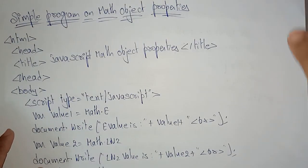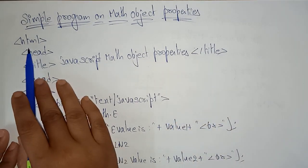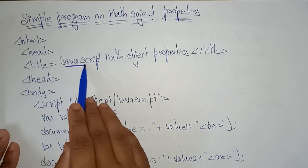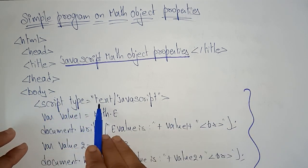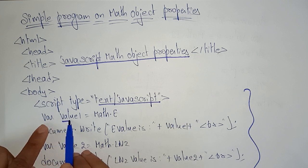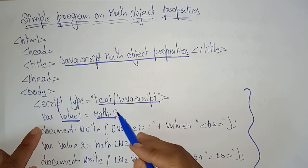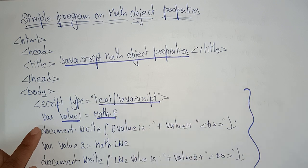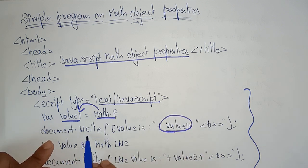Let's see a simple example of how to use the Math object using Math properties and methods. In the HTML, the title is 'JavaScript Math Object Properties'. Inside the body, I'm calling the script tag with type equal to text/javascript. I'm declaring a variable value1 assigned to Math.E — the exponent static value will be stored in value1. Then I'm printing it using document.write: 'E value is' plus value1.